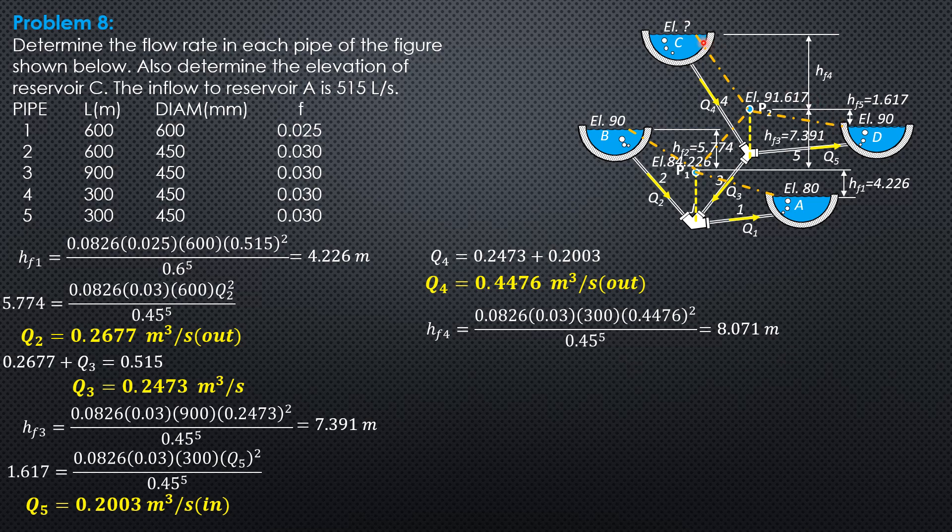Finally, the elevation of Reservoir C is 91.617 plus HF4. So elevation of C is 99.69 meters.